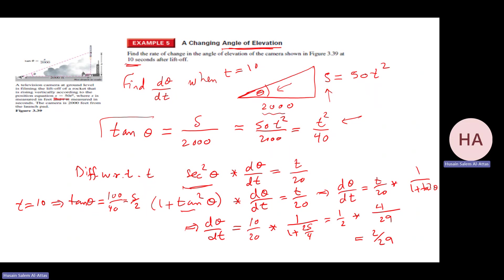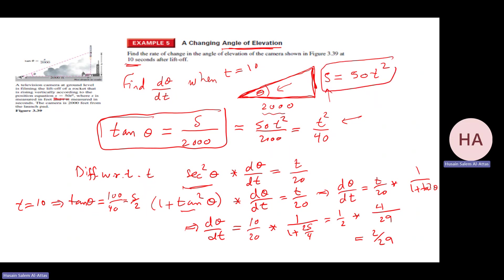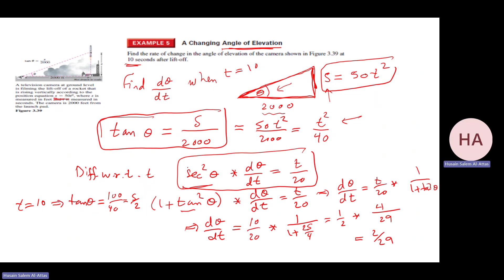The idea is very simple: from this triangle I need the tangent. I have this relation and it gives me s in terms of t, so I just plug it in. That way I can find tan θ, differentiate, and then substitute since I know t. That's all — we differentiated and did the calculation.